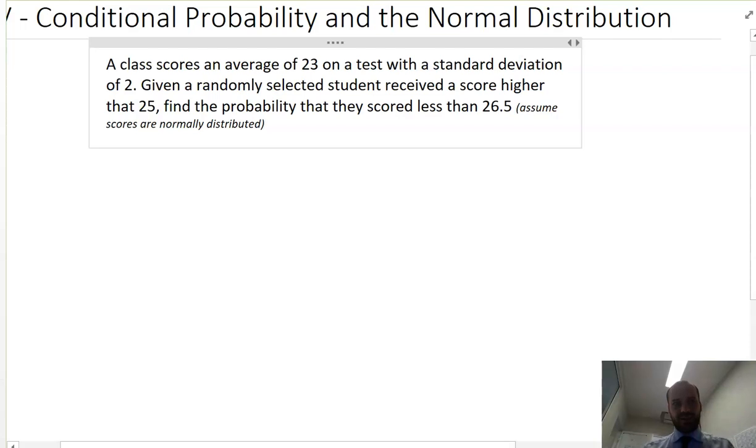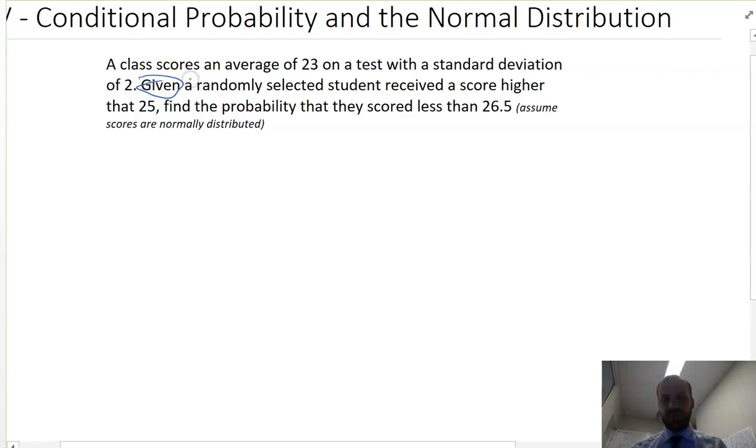Now the hint that this is a conditional probability is this word here, given. Usually if it's like given this happened then this, that's conditional probability.